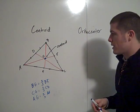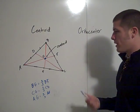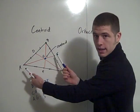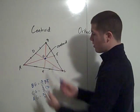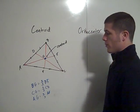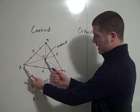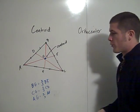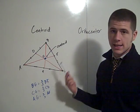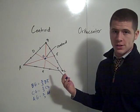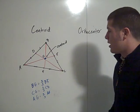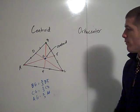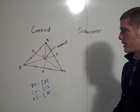For example, if you're given that AE is nine units, then AG is six and GE is three, since the centroid lies two-thirds of the way along the median from the vertex to the opposite midpoint.